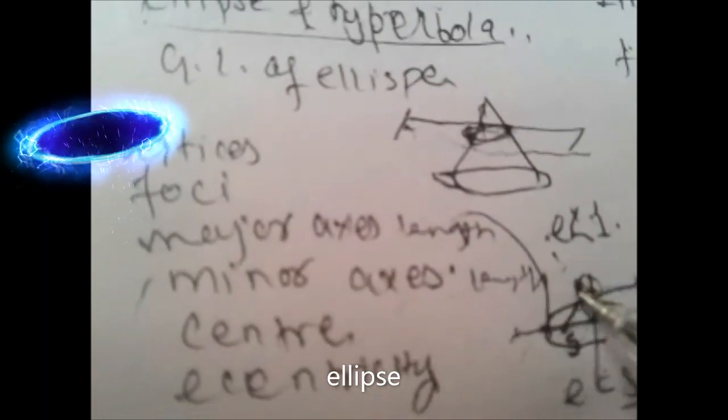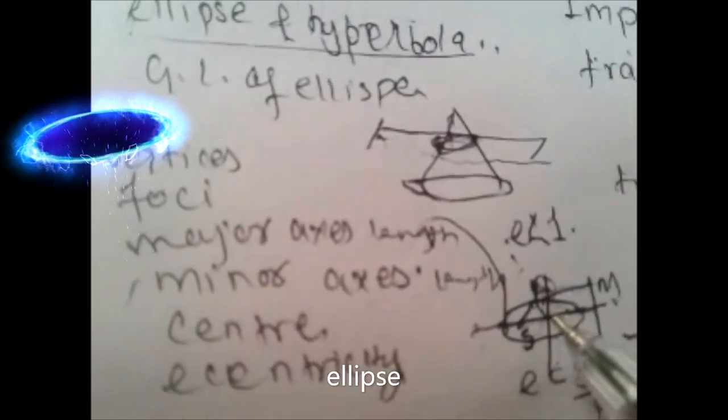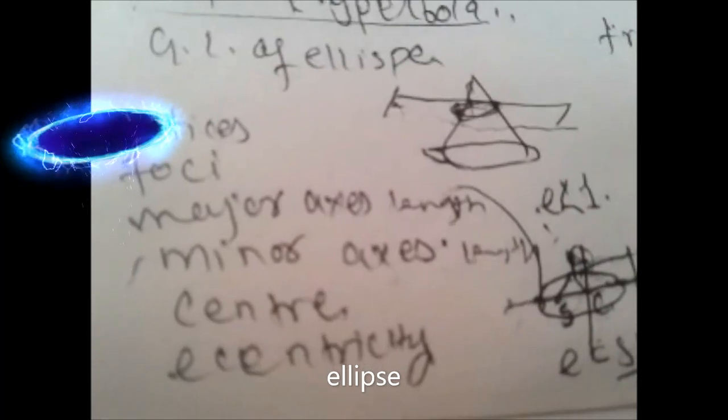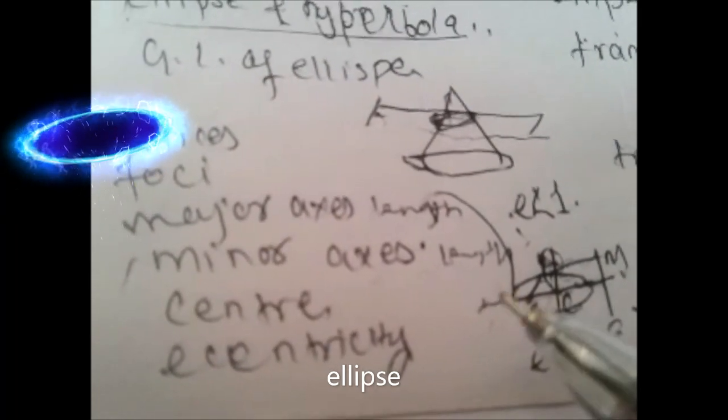These are vertices and this is the center of the ellipse. Eccentricity has already been discussed.